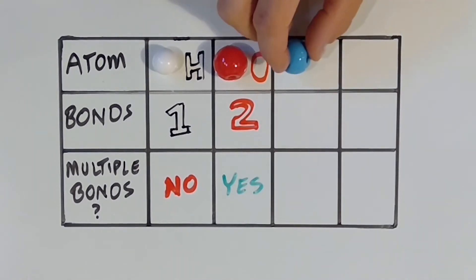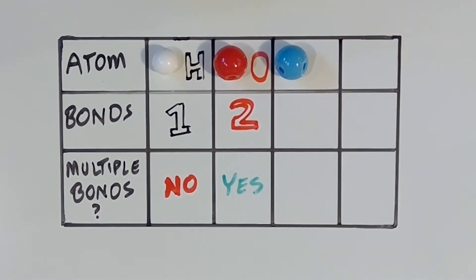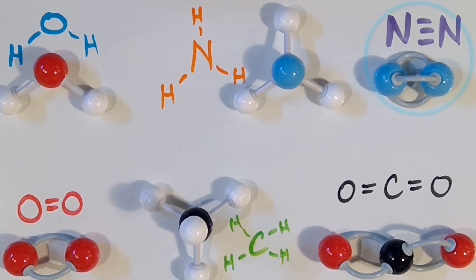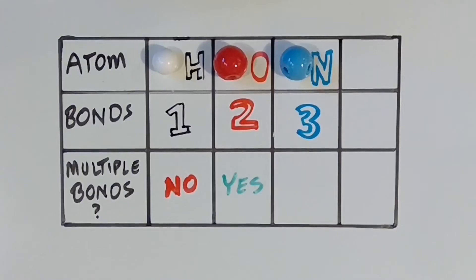Now let's look at nitrogen and see how it behaves. Do you spot any rules based on the examples we have? In ammonia, nitrogen is bonded three times — one bond for each hydrogen. In nitrogen gas, we find a triple bond. Again, three bonds. So we can conclude that nitrogen will always form three bonds total, and it is possible for nitrogen to form multiple bonds.